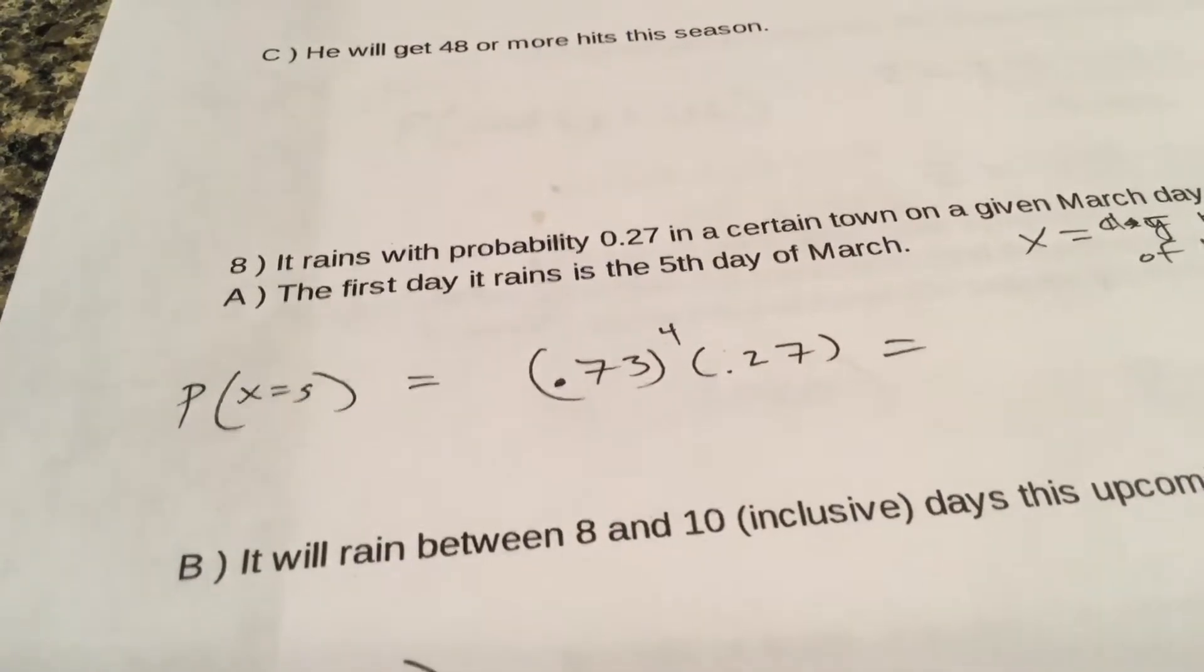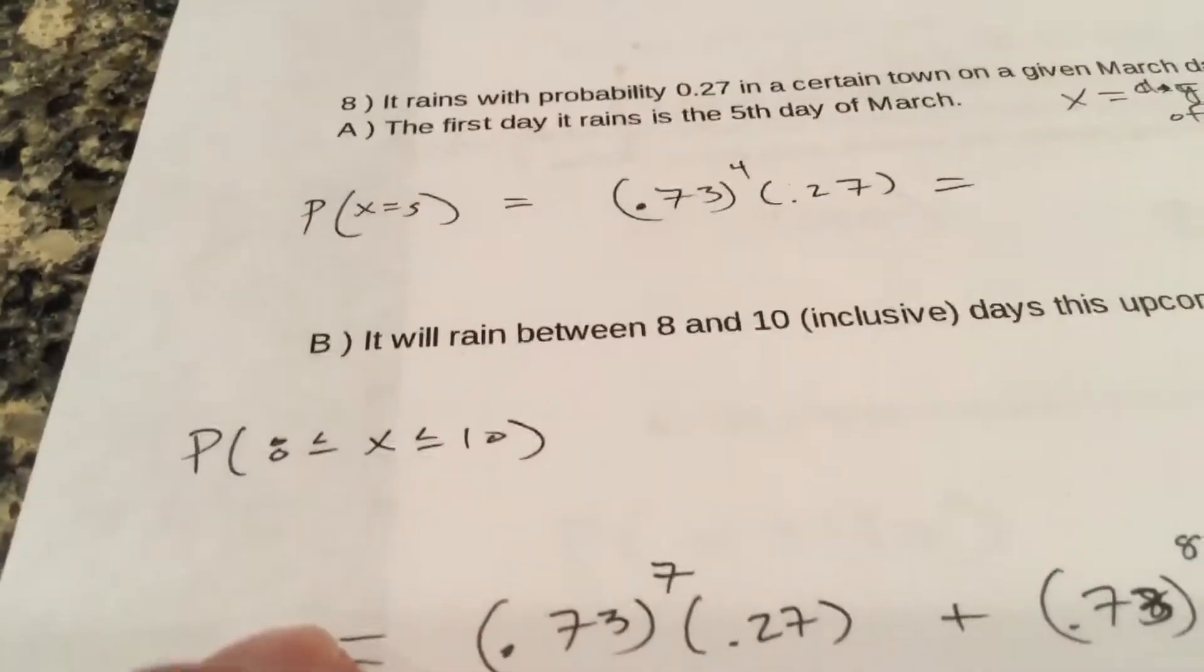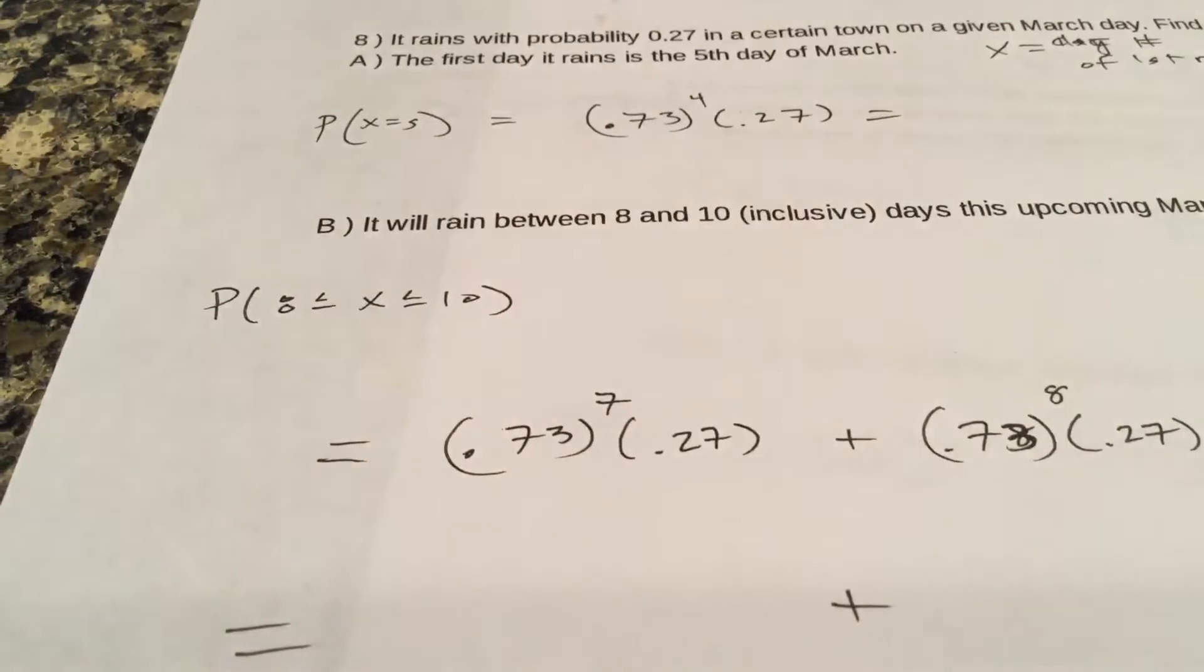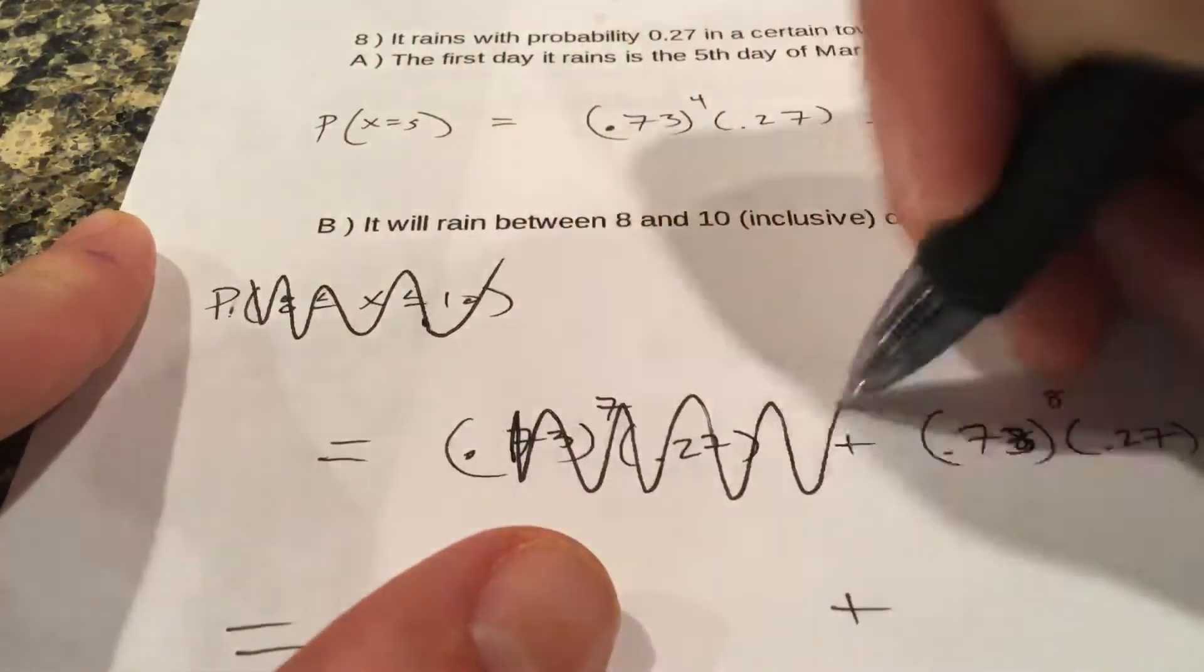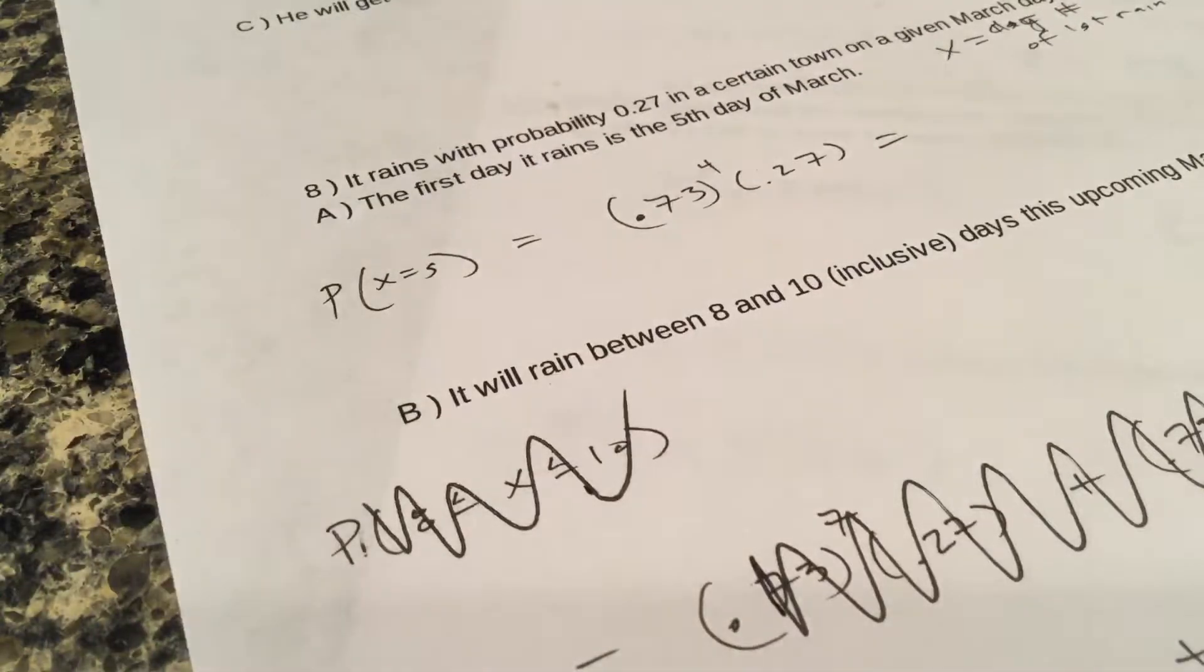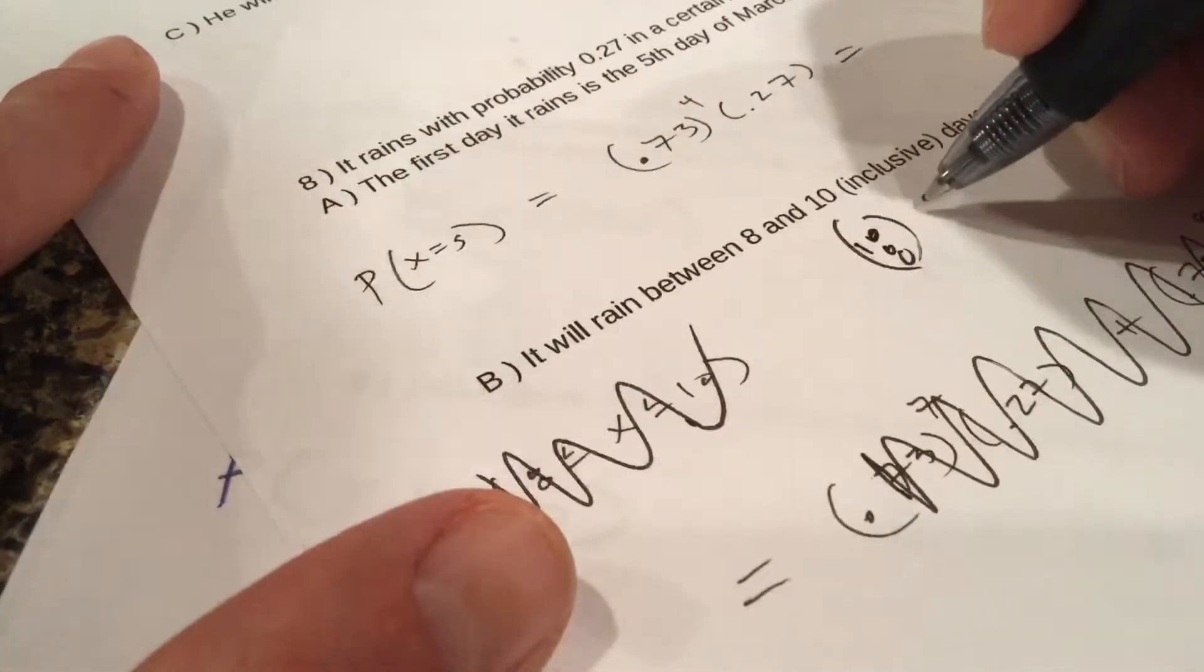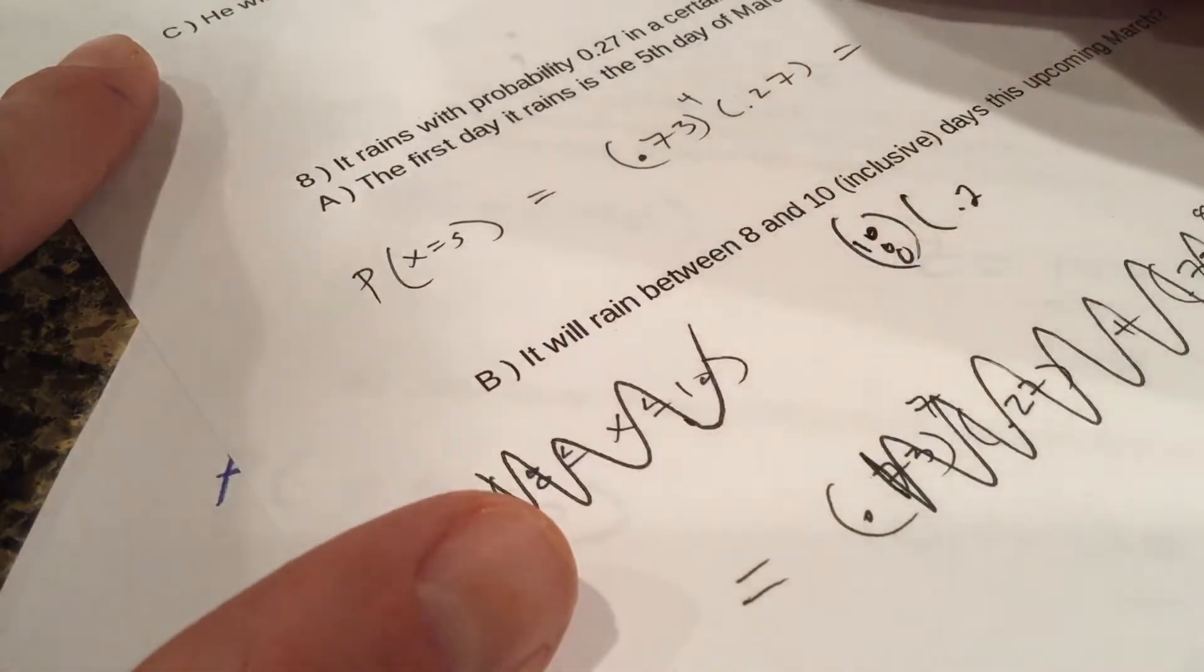It rains for the first time on the fifth day, that means it doesn't rain four times then it rains. Okay, it will rain between - nope, I did this one totally wrong. So this one's actually, if you did, you're gonna have to use binomial there. We'll talk about this one tomorrow. So you want eight, or 10 choose eight, the probability that it rains - I'm sorry, not 10, how many days are in March? Here's where we need the number of days, there's 31 days in March.